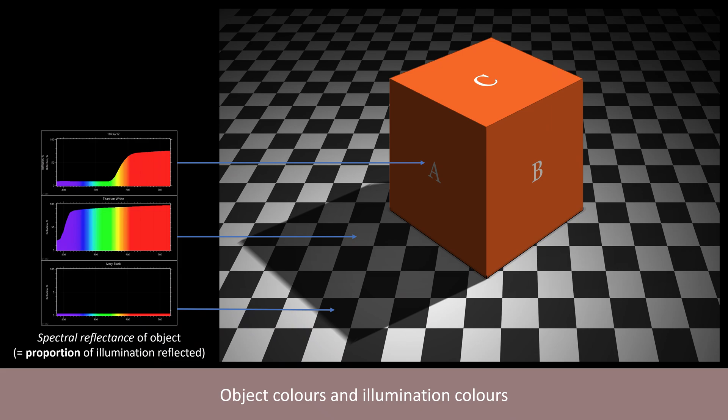For example, we perceive the lighter coloured tiles in the floor as being white things, even though the amount of light reaching our eyes from them in different areas varies greatly.